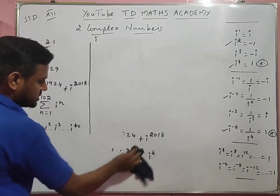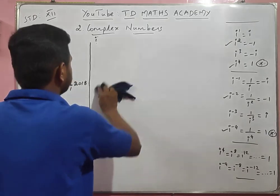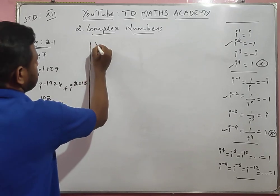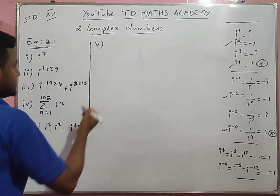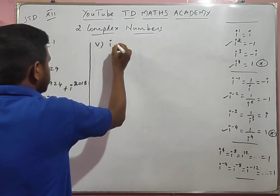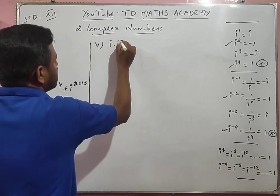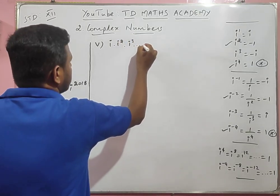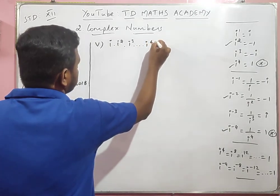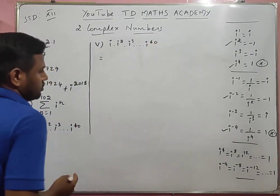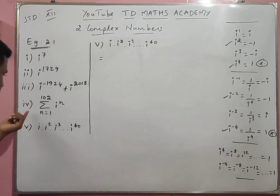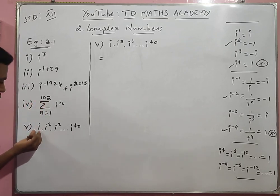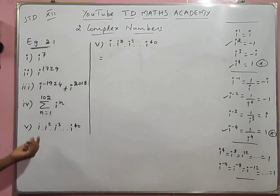Next, fourth sum and fifth sum. Fifth sum: i into i power 2 into i power 3 into ... into i power 40 — this is a product. Fourth sum uses summation concept, fifth sum is a product.